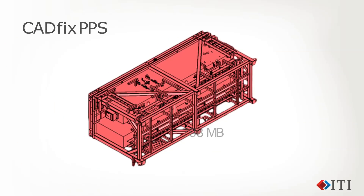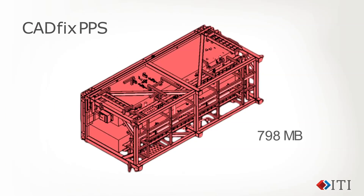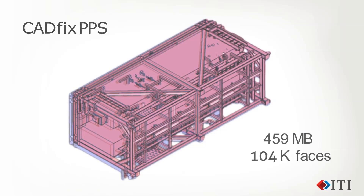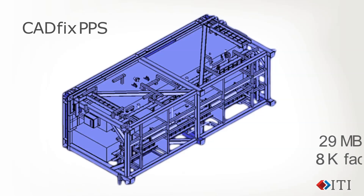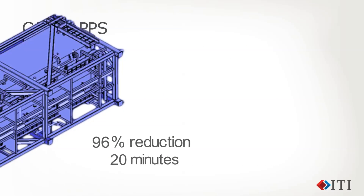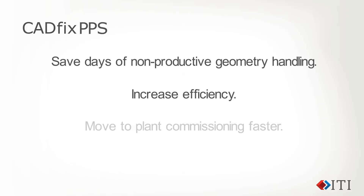For example, CADFIX reduced a 798 megabyte file containing almost 141,000 faces to a 29 megabyte file with just over 8,000 CAD faces. CADFIX achieved this 96% file size reduction in just 20 minutes. This process can save days of non-productive geometry handling, increase efficiency, and move to plant commissioning faster.